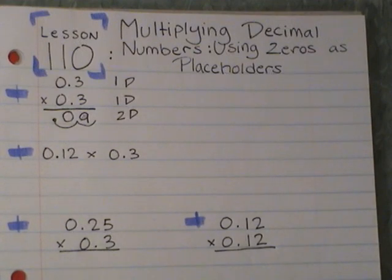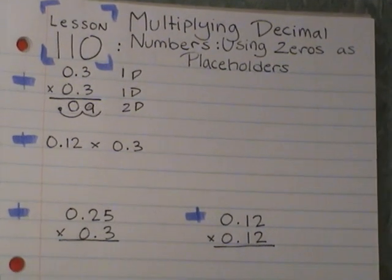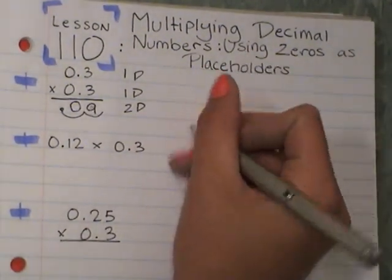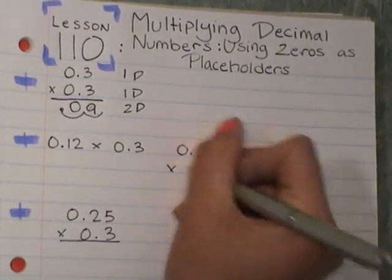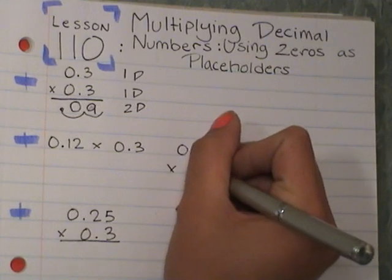We'll talk about tomorrow why this makes sense and why this works, but right now we're going to learn how to do the math part of it. So I'm going to set up the next one, and I have 12 hundredths times 3 tenths.